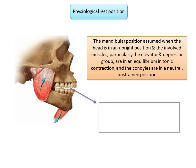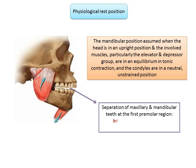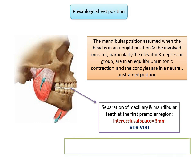This position most commonly results in a separation of the maxillary and mandibular teeth of about 3 millimeters at the first premolar region, termed the interocclusal space — which is the difference between VDR (vertical dimension at rest) and VDO (vertical dimension at occlusion).